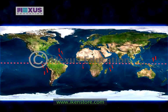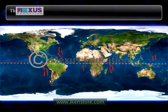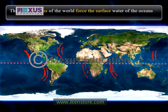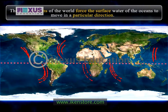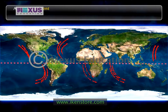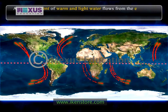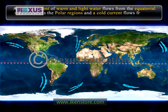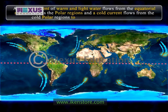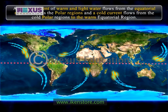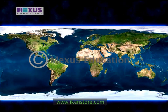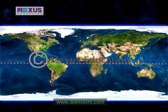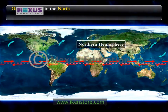Ocean currents are powered by the wind system of the world. The wind systems push the surface water of the oceans to move in a particular direction. A surface current of warm and light water flows from the equatorial region towards the polar region, and a cold current flows from the cold polar regions to the warm equatorial region. The prevailing winds lend speed and direction to a mass of water.